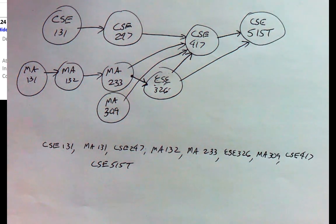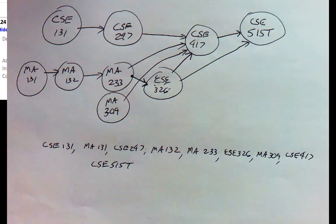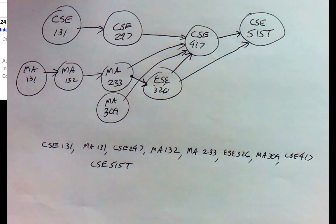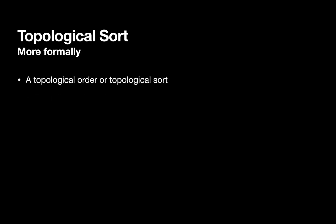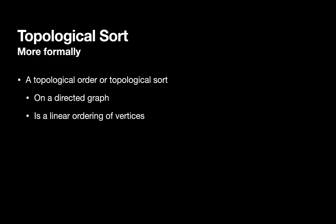This idea of topological ordering comes up a lot. Almost any time you're constructing a schedule for a complicated project with lots of dependencies, you encounter prerequisites — things that must be done before other things can be done. A topological sort can only be done on a directed graph because we're putting things in order based on dependencies indicated by the direction of arrows. It also needs to be acyclic, since cyclic dependencies could never be satisfied. A topological sort is a linear ordering of vertices.